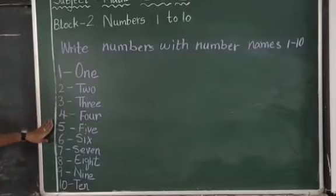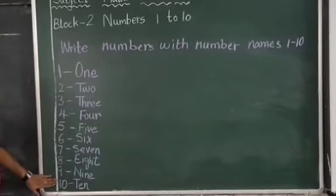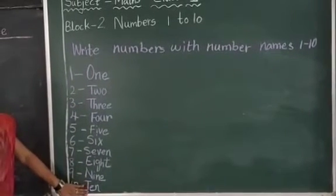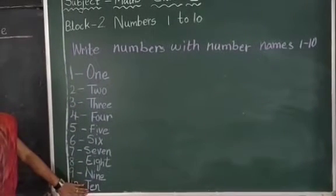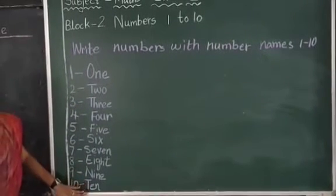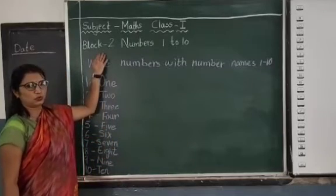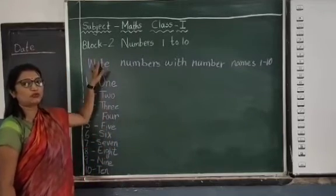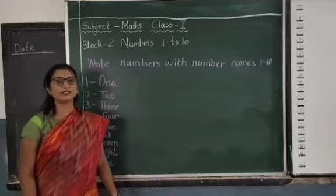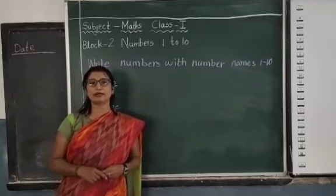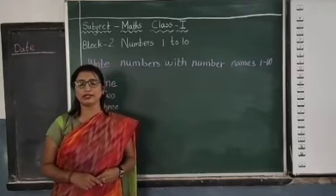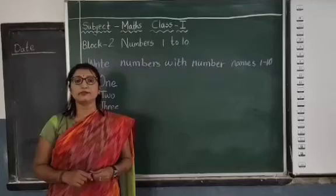So children, these are the numbers 1 to 10 with their number names. Now open your workbook, page number 16. Write the date.